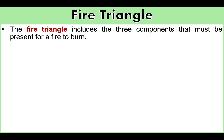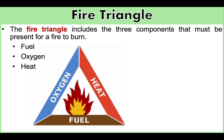The fire triangle includes three components that must be present for a fire to burn: fuel, oxygen, and heat or ignition source. This is what you call the fire triangle. Without one of these components, fire cannot exist.